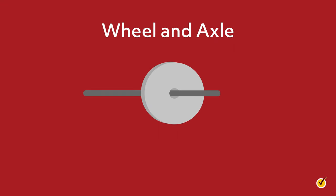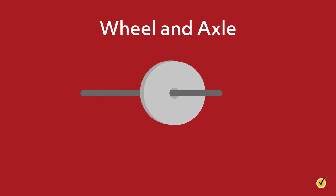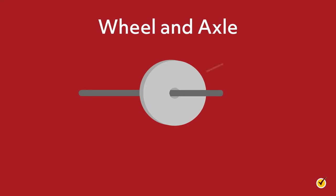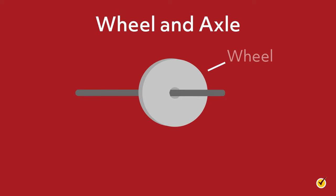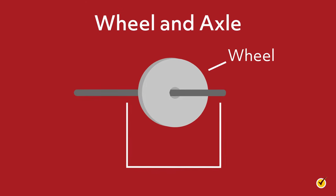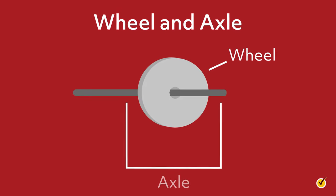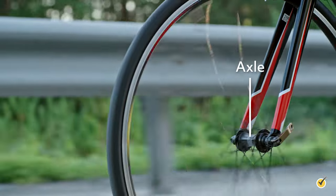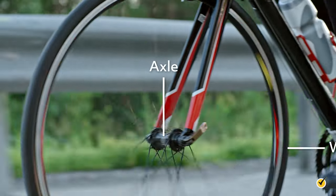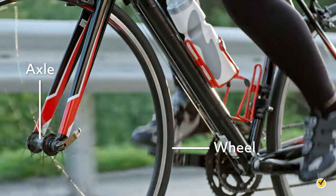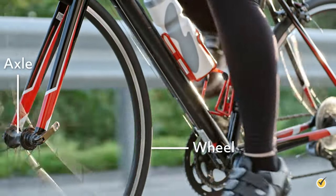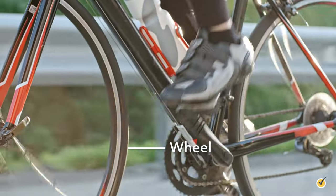A wheel and axle is one of six types of simple machines and consists of an outer ring or cylinder called the wheel and an inner ring or cylinder called the axle. These two parts are rigidly connected and move together in the same direction when a force is applied to either the wheel or the axle.